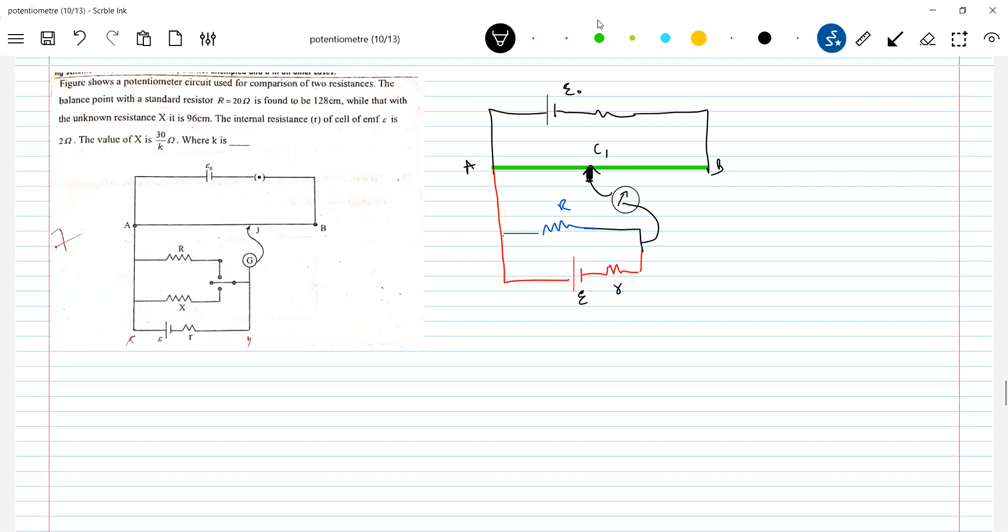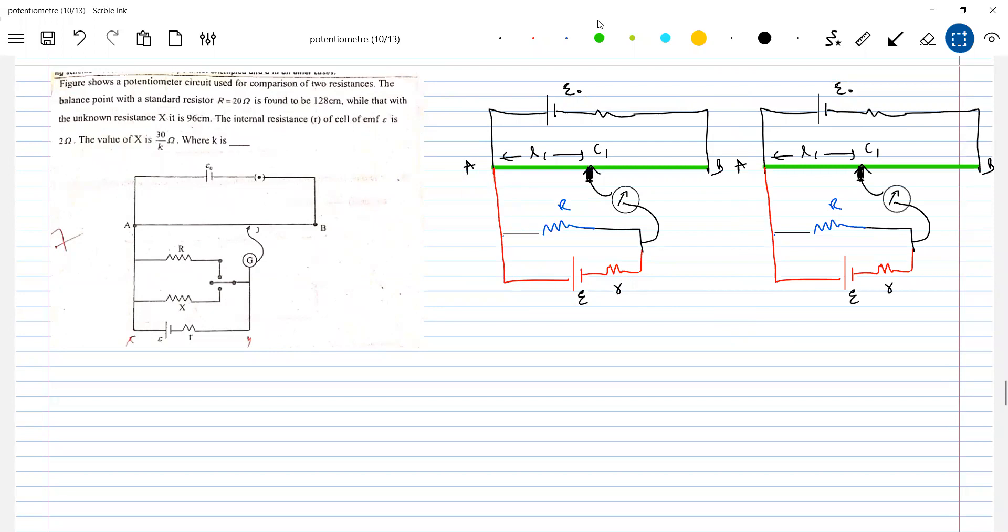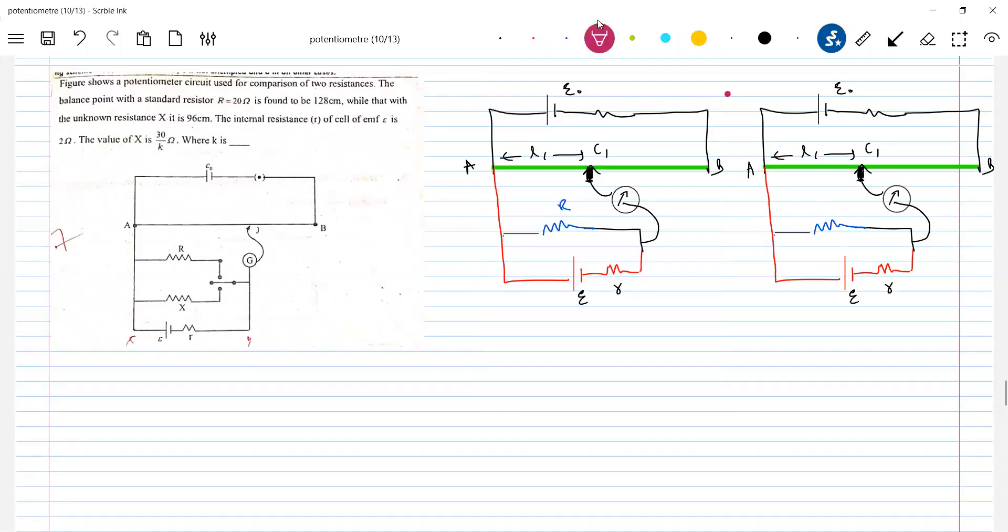So we know this length and we know value of R. What is the next part of the circuit? The next part of circuit will be in place of R, now X will be there. So balancing length will be 96 cm.